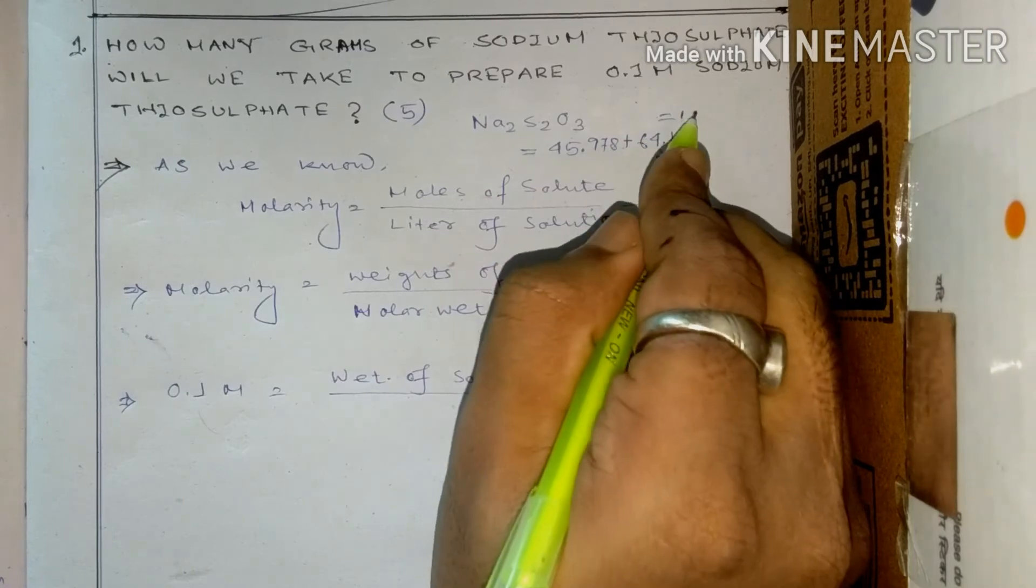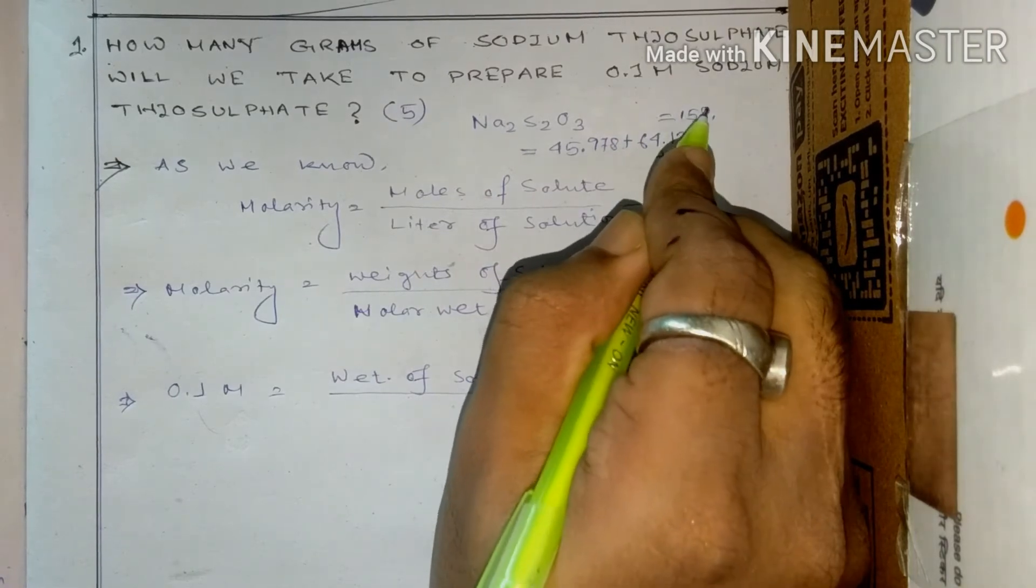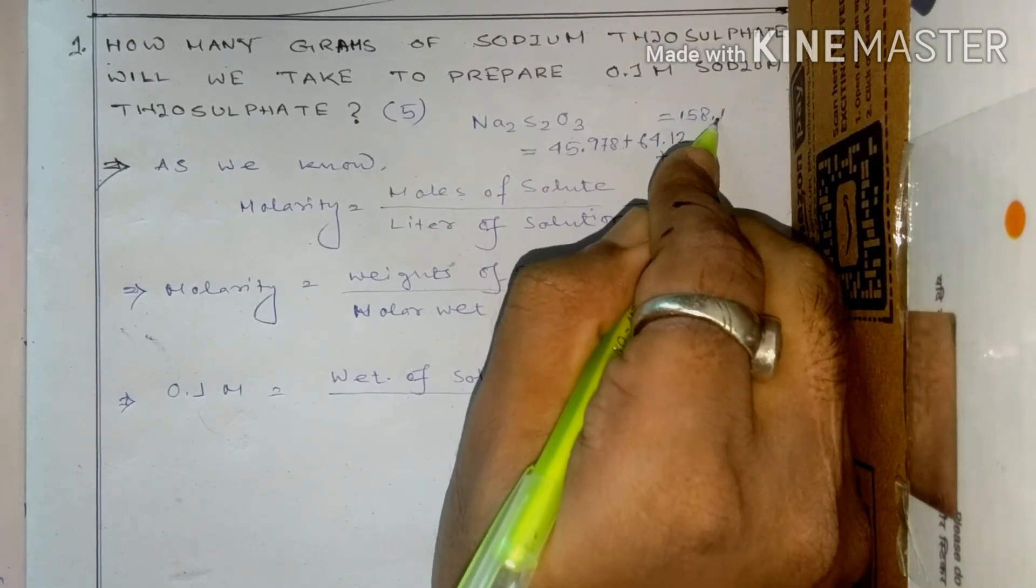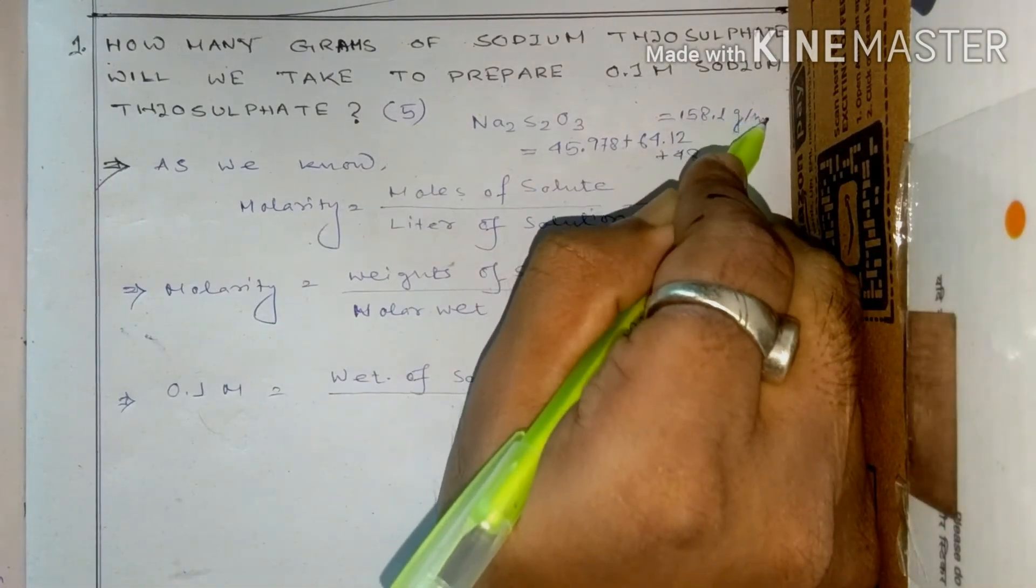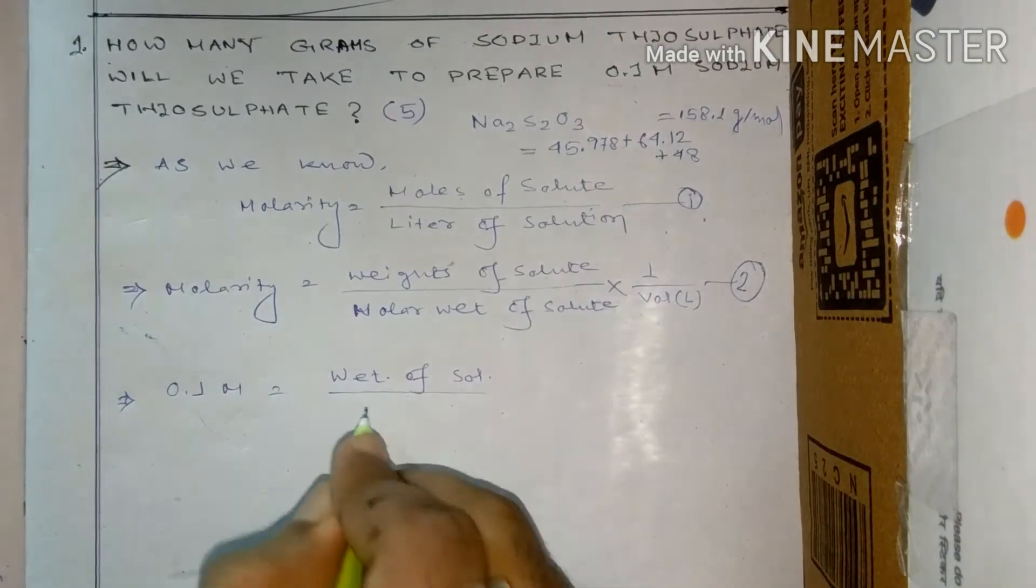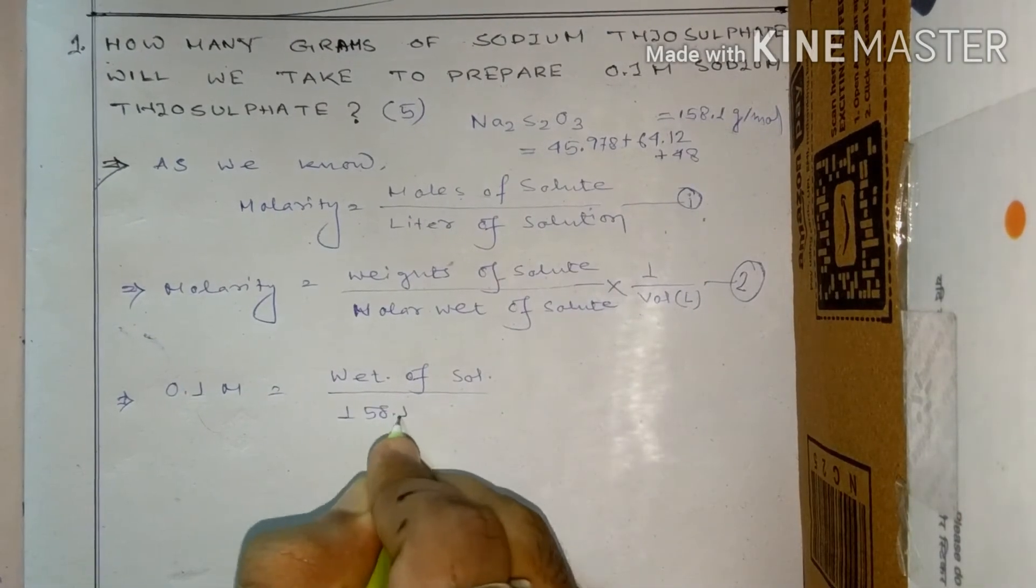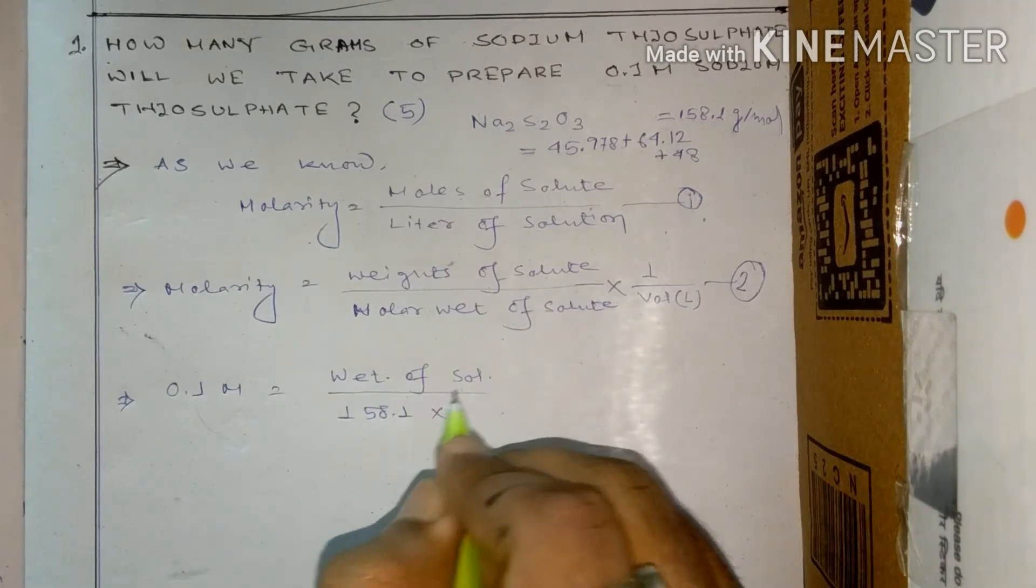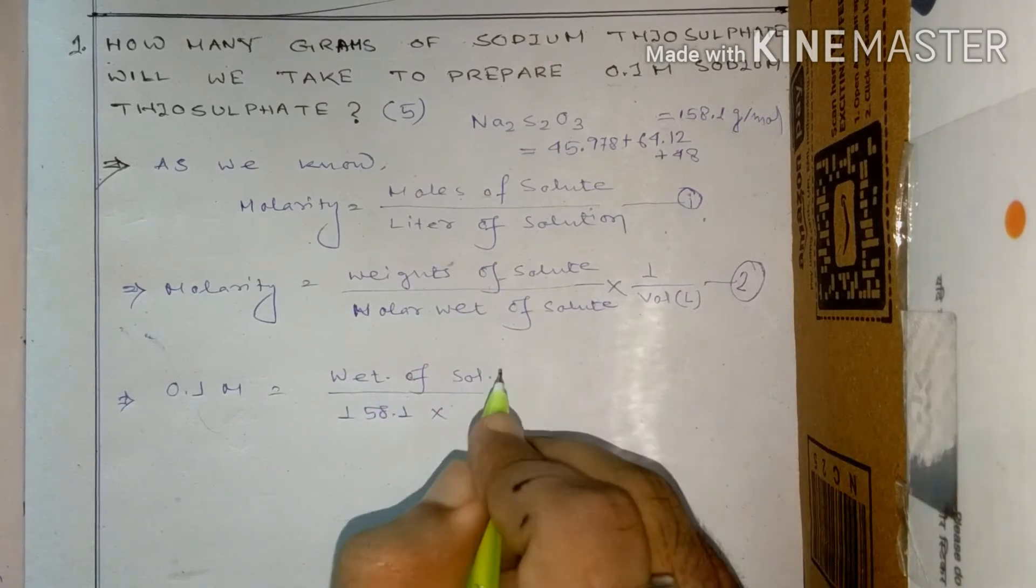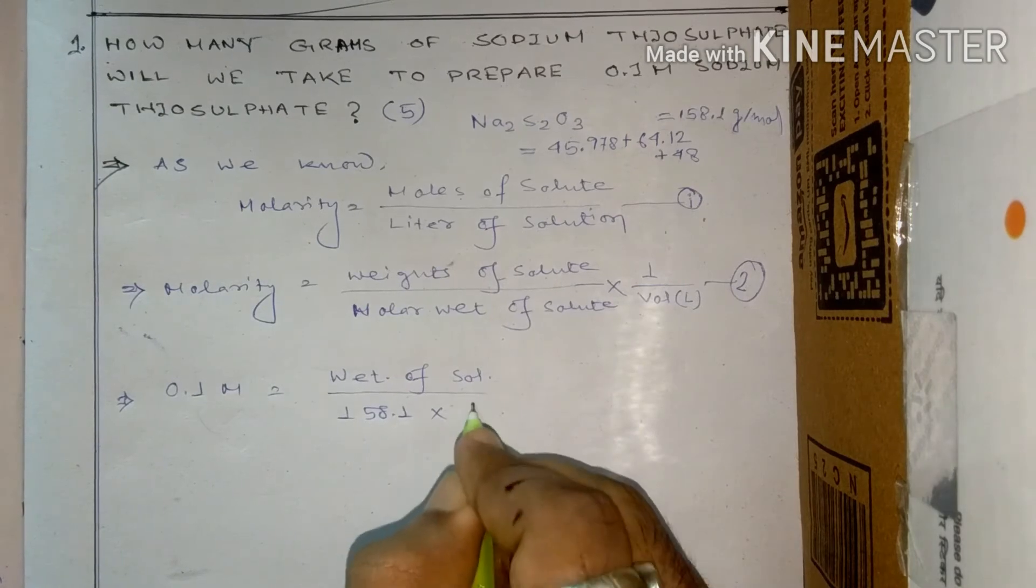So it equals to 158.1 grams per mole. So that means 158.1, and we are just preparing a one liter solution, that means 1000 ml, so it's 1.